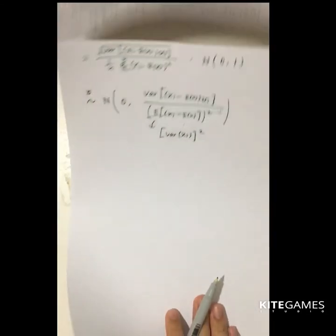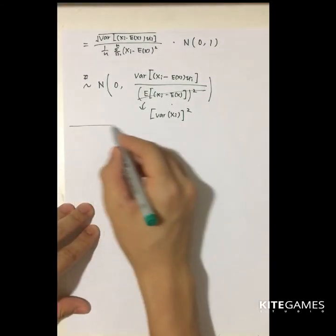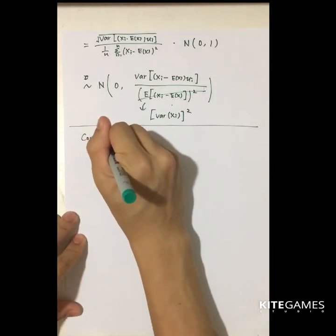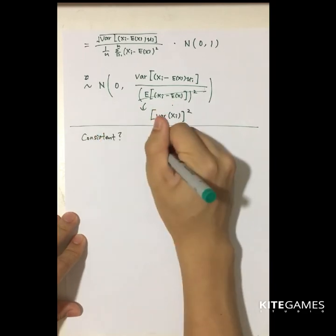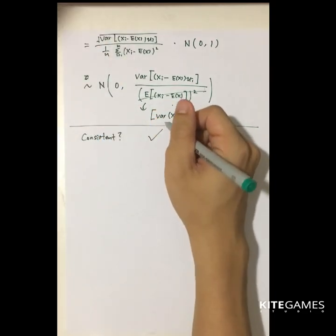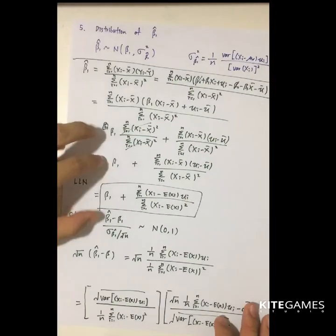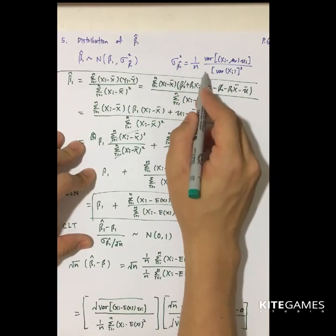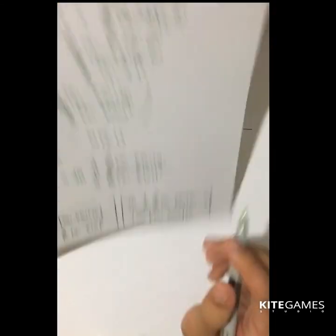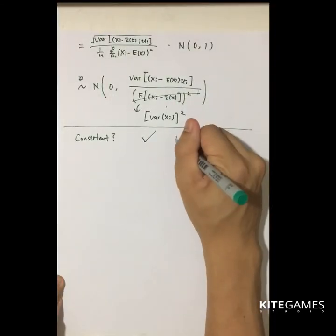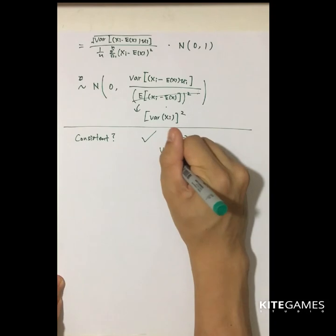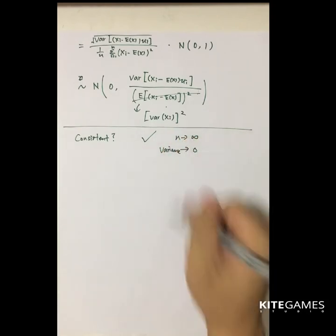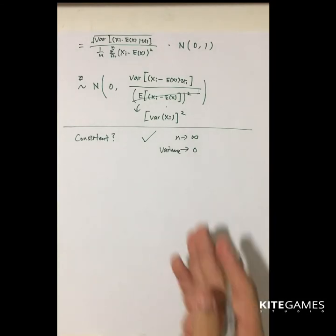So why do we need to take this form — whether the estimator is consistent? The answer is yes, because if we look at the variance: when n goes to infinity, the variance will become zero. This satisfies the consistency definition, the consistency lemma.